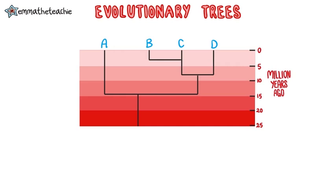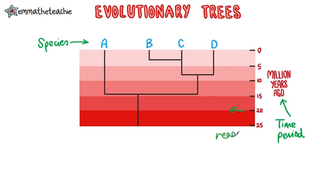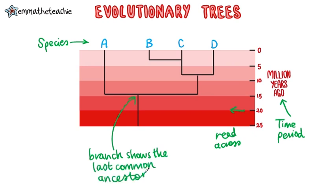Evolutionary trees are made using current classification data for living organisms and fossil data for extinct organisms. The species names are put along the top of the diagram — I've used letters here to keep it simple. The time frame will be given, usually in millions of years, and you read across from it until you reach the branches. Where two branches meet, it shows the last common ancestor between two species. Where the branches split is where speciation occurred.